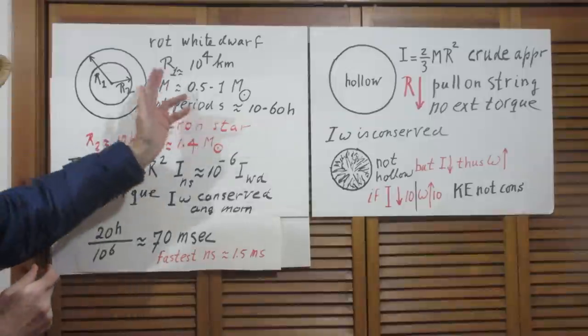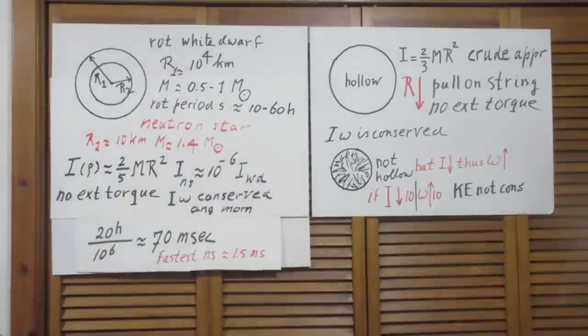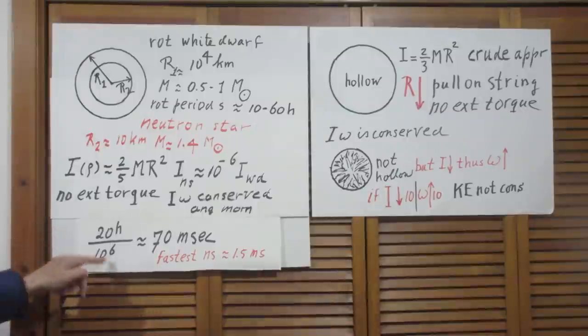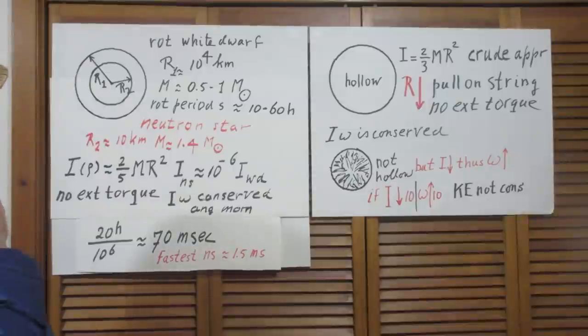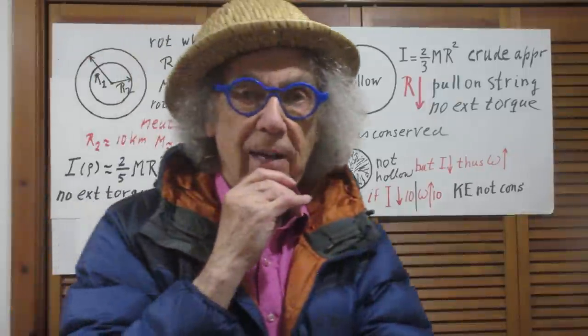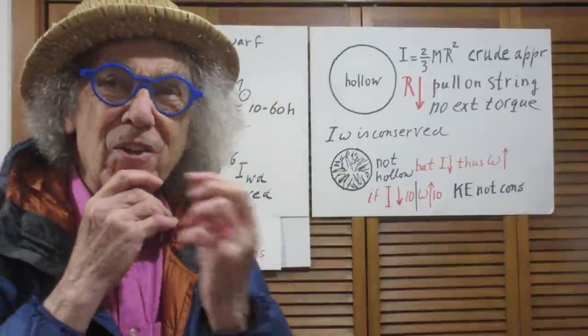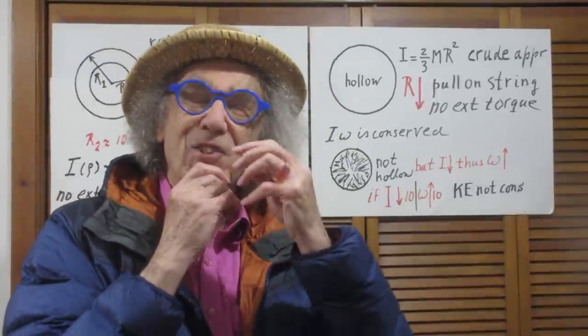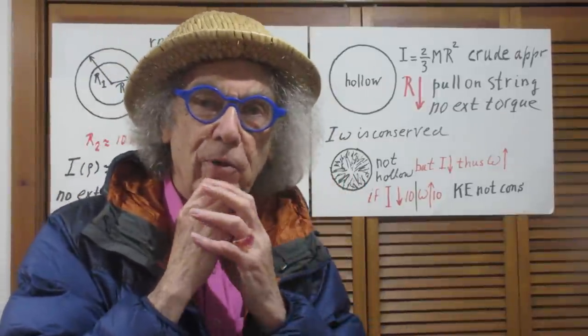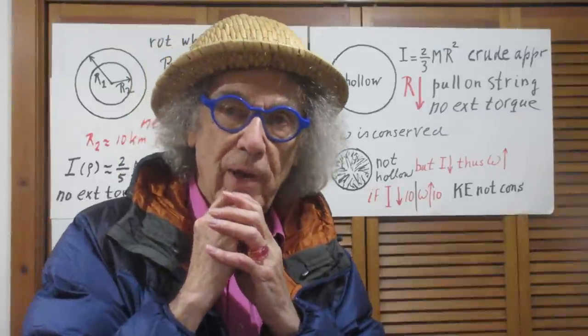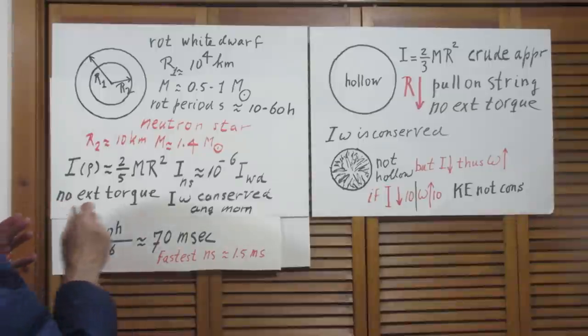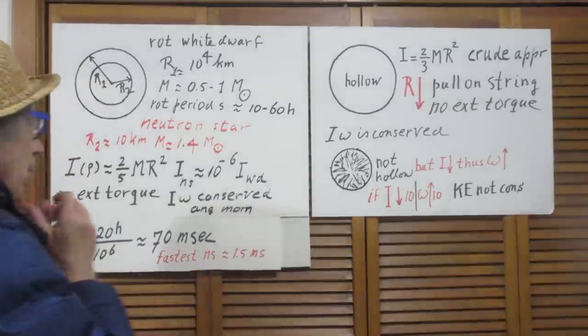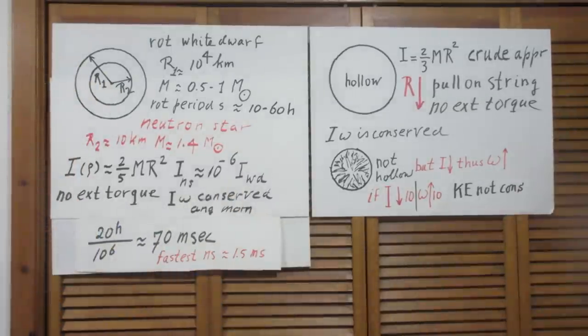If we just pick a random number, 20 hours for the white dwarf, then after the collapse when it is a neutron star, the neutron star would rotate about its axis in about 70 milliseconds, a million times faster. An extraordinarily striking example in astronomy of the conservation of angular momentum. The fastest neutron star, by the way, is one and a half milliseconds, but that's irrelevant now.